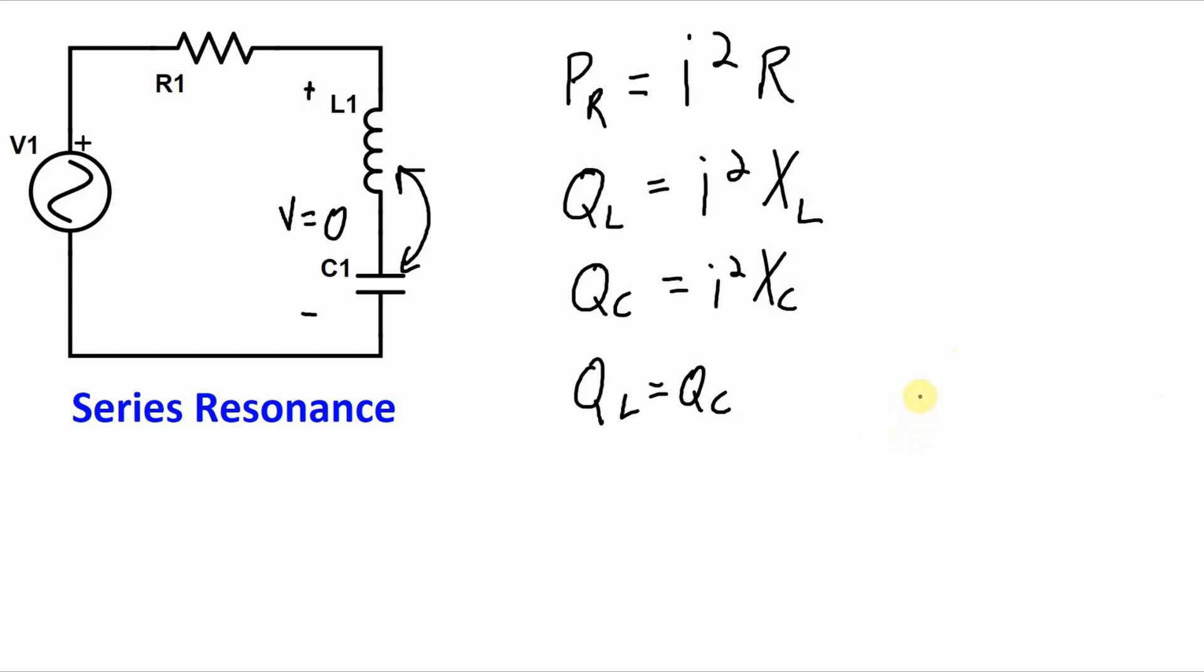And if we were to illustrate this graphically on the real and imaginary axis, we would have the real power of the resistor. We would have the reactive power of the inductor and the reactive power of the capacitor. Those two values are equal to each other. So what we end up with is the apparent power of this circuit is simply equal to the power of the resistor.